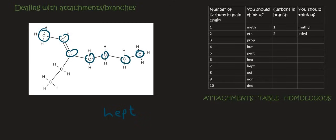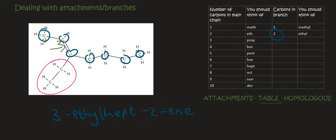Now we must name it. This part here is going to be considered the attachment. We've looked at the table and the homologous series — this is an alkene. You always name it from the side closest to the functional group, so carbon 1 and then carbon 2. We're going to say 2-ene. Now we look at our attachment on carbon number 3. There are two carbons in that branch, so for the first time we use ethyl. The name of that molecule is 3-ethylhept-2-ene.